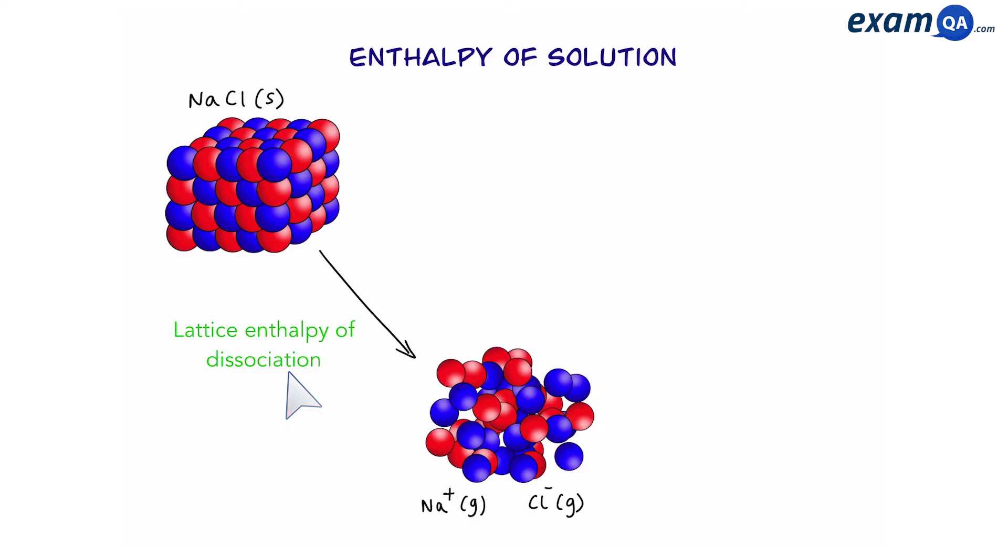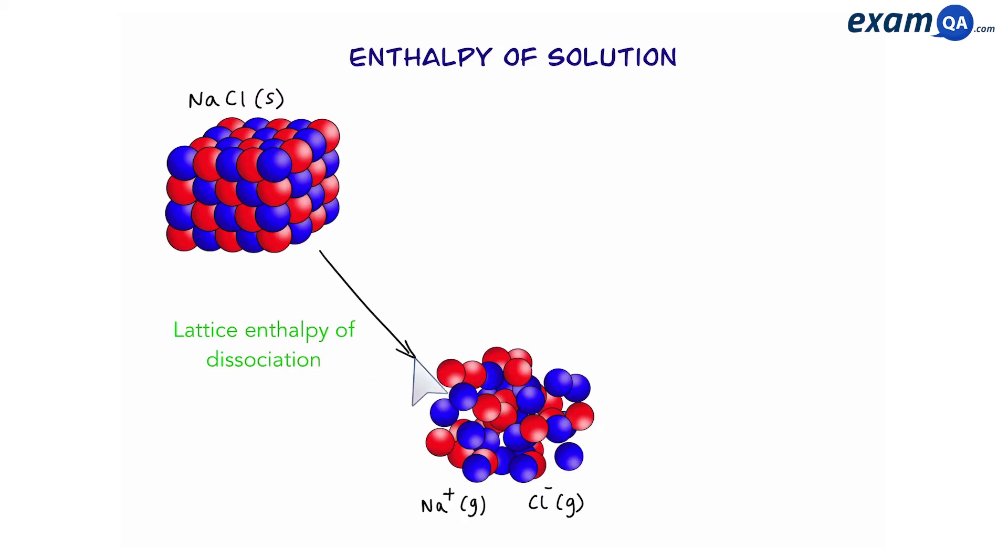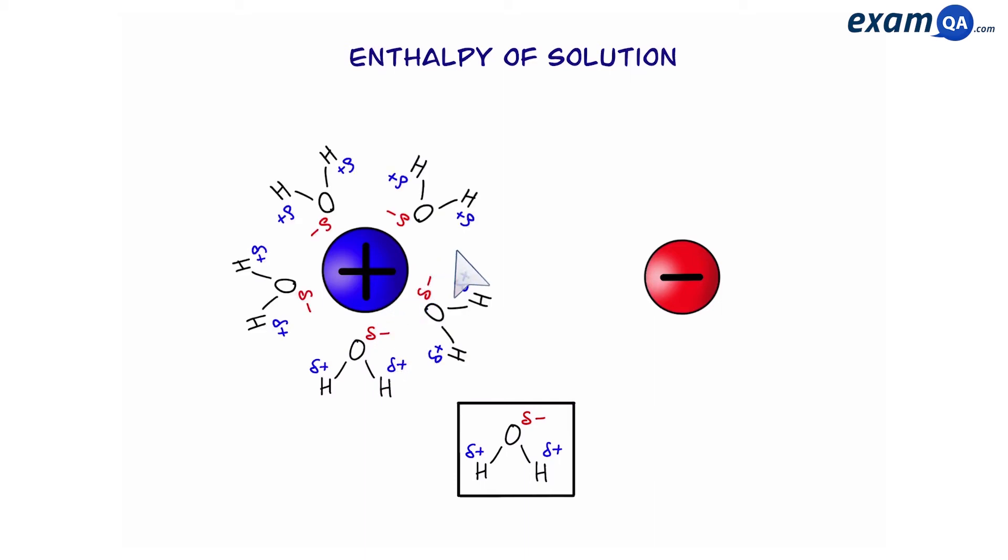But we're not finished yet. So now we have gaseous ions but they're surrounded by water molecules. Now we know water is a polar molecule meaning it has a positive side and a negative side. So the negative side of water will attract the positive ion and they will surround it completely. And the positive side of water will attract the negative ion and it will also surround it.